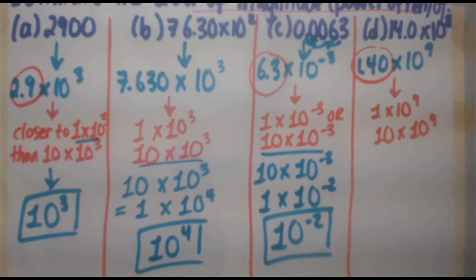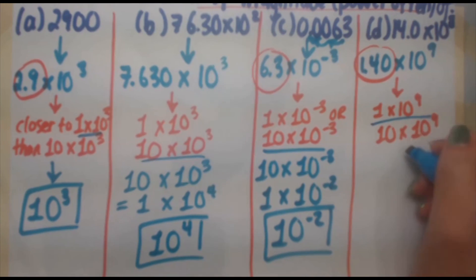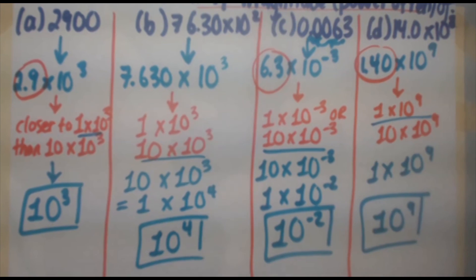So 1.4 is closer to 1 than it is close to 10. So 1 times 10 to the 9 gives it an order of magnitude of 10 to the 9.